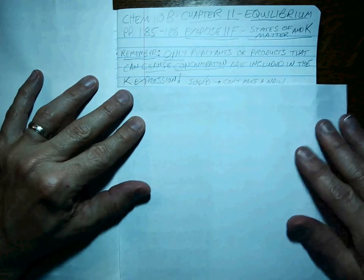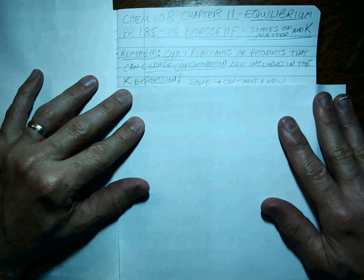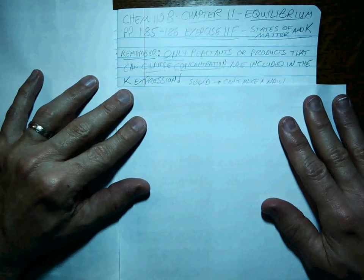Okay, so what are the four different states of matter? Solid, liquid, aqueous, and gas. So let's think about it.